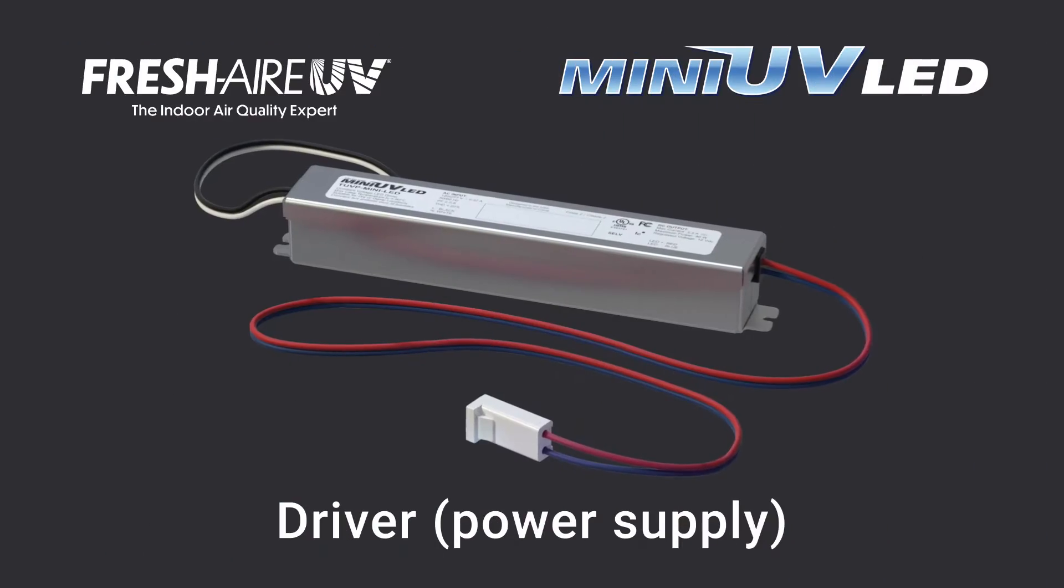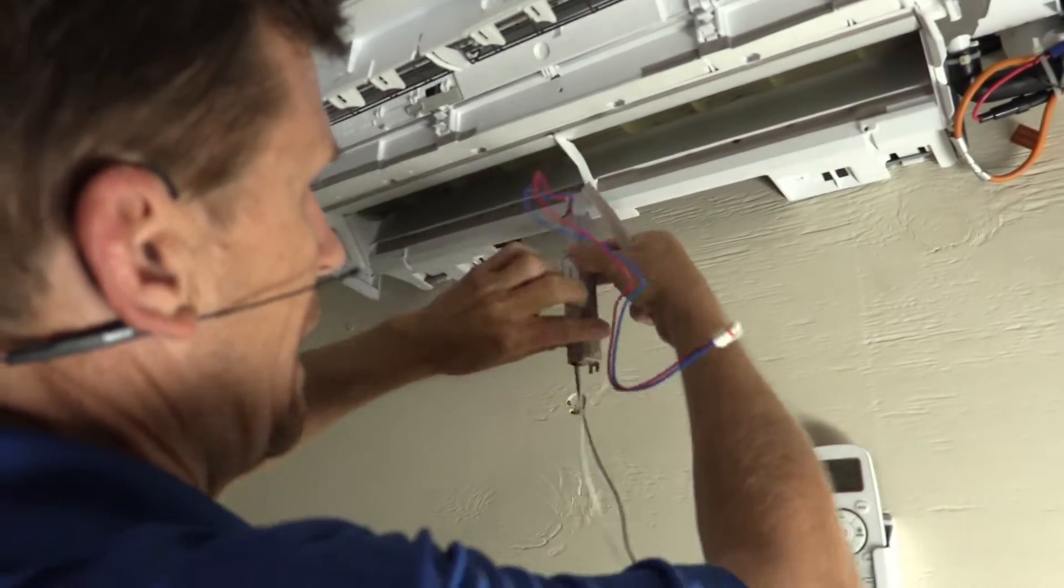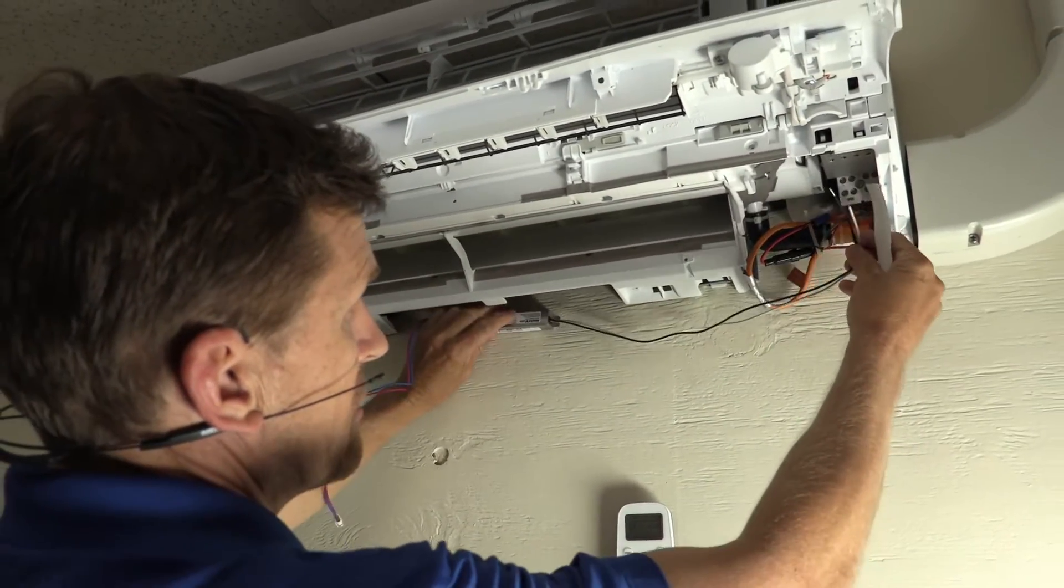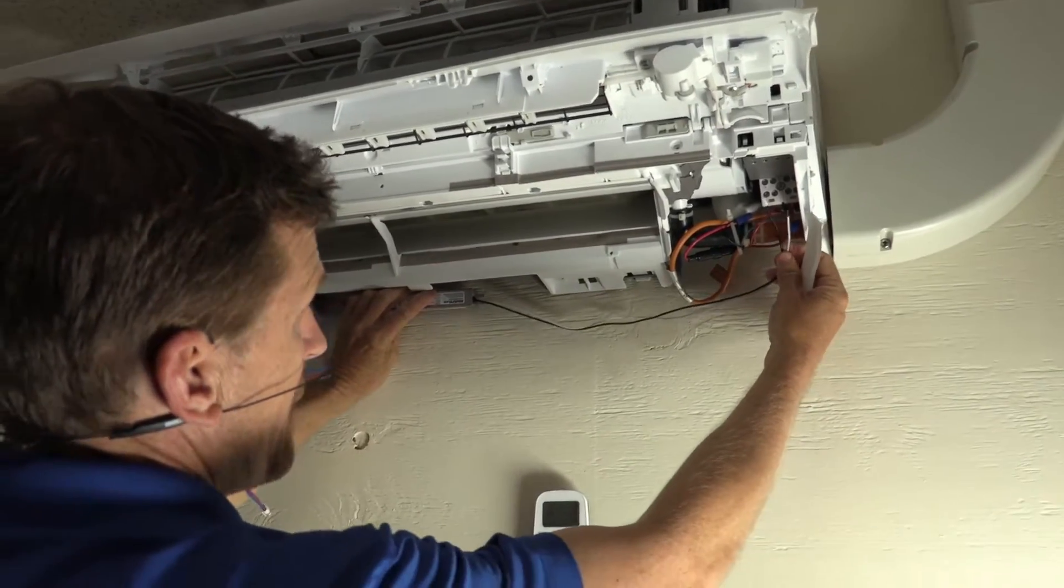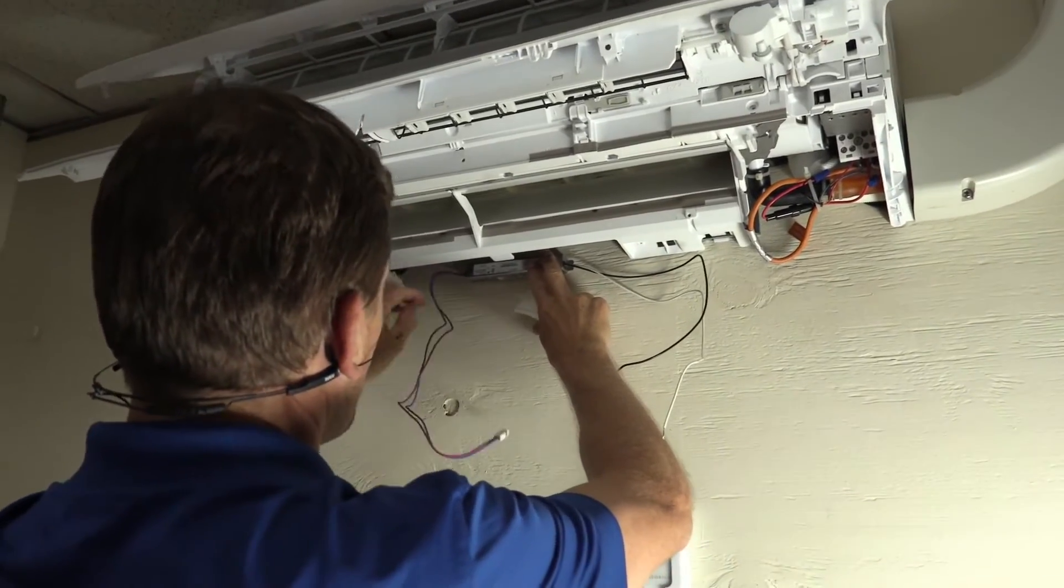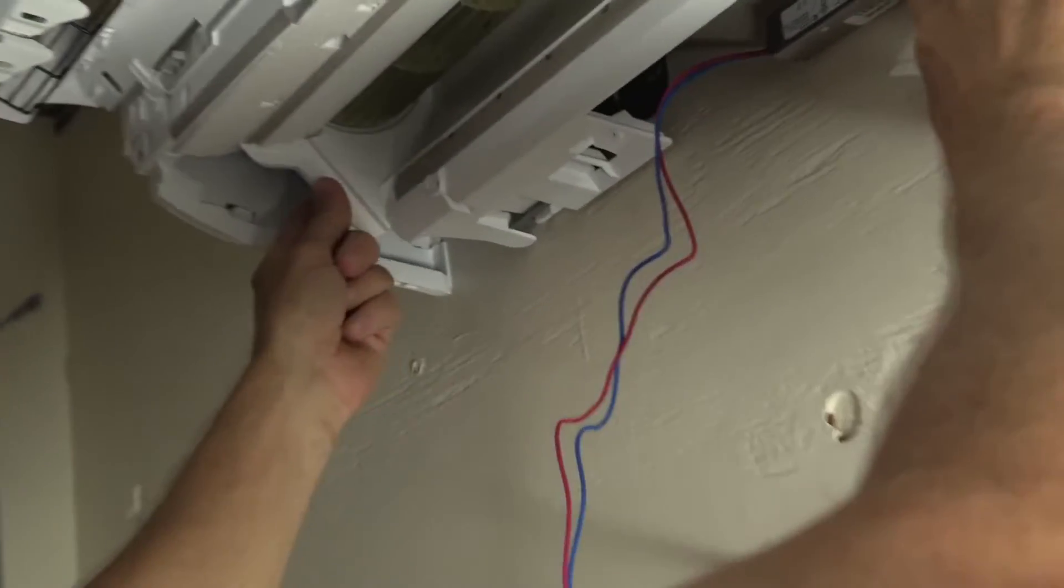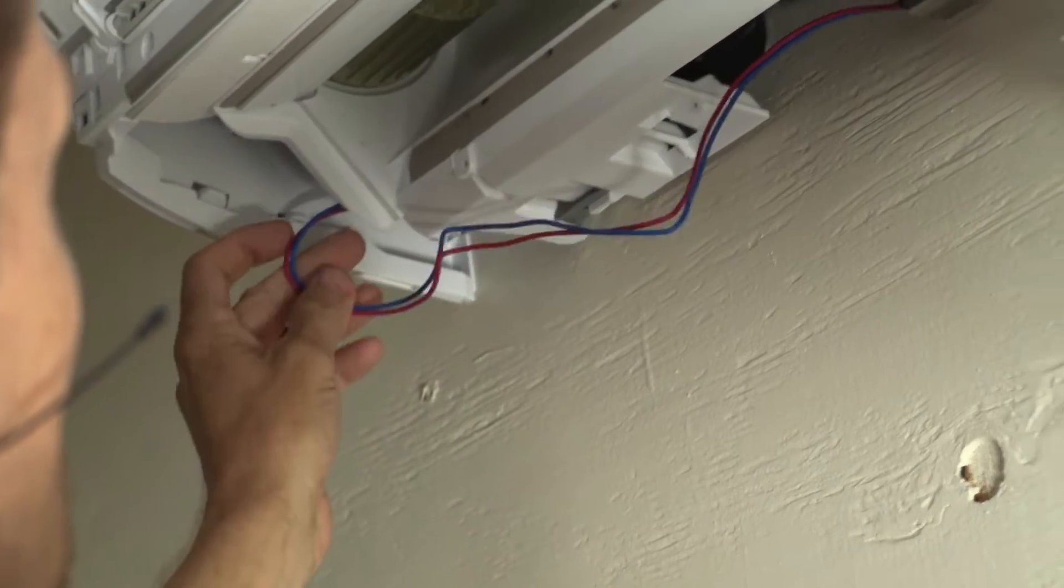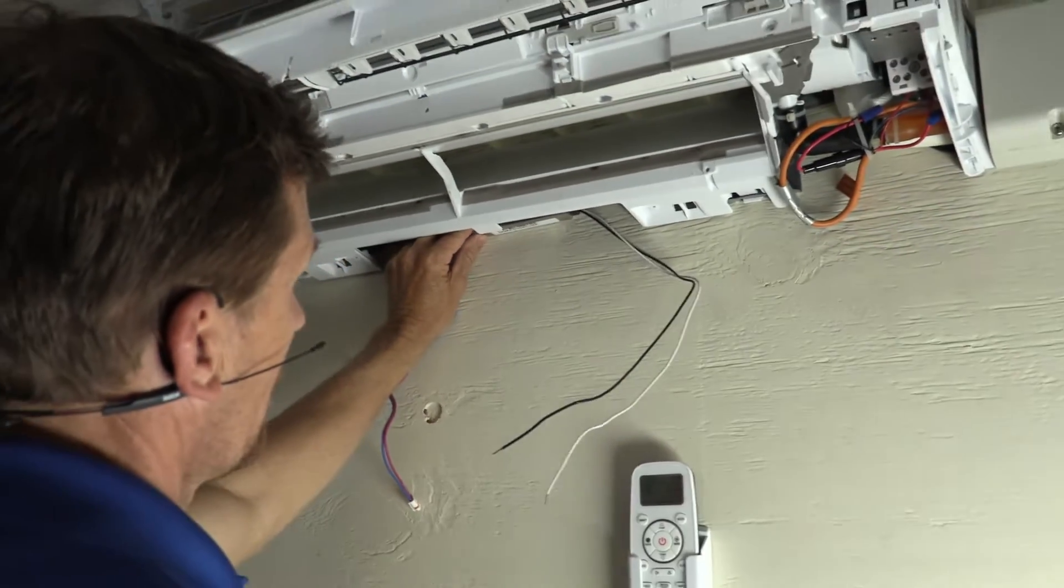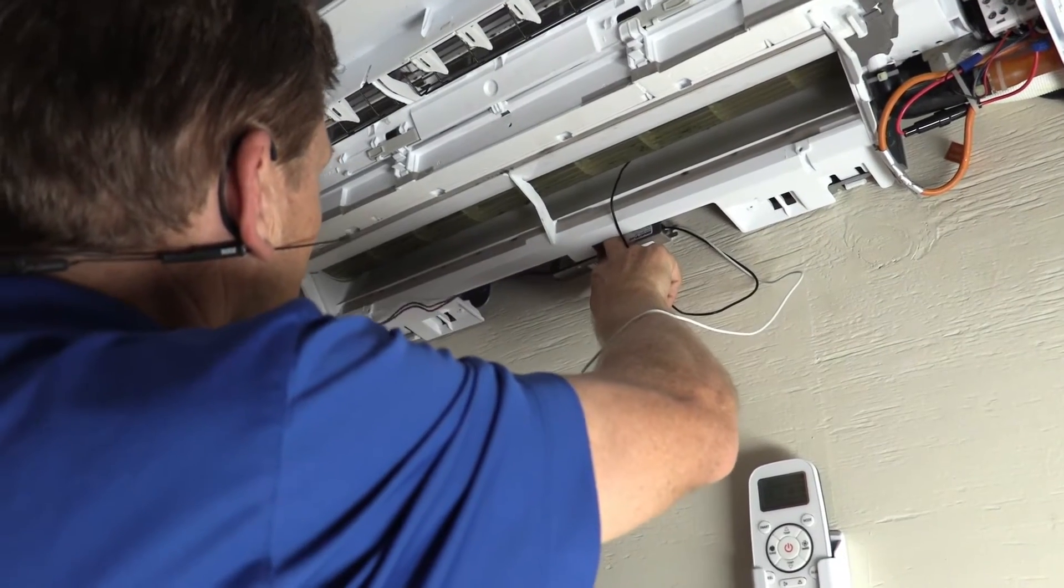When you're installing the driver, you want to first find the best location for it. In this particular model, you want to make sure that your leads are going directly to your control board, that you actually have enough wire to go directly to where you're going to be making your connection, and also that you're going to have enough wire to connect to the strip. In this case, we're actually going to make a hole penetration here on the left-hand side, just a small enough hole using a unibit to be able to feed this connector through so we can make the connection to the strip. And we're going to mount the driver dead center so we have enough wire on this side and we have enough wire to the lamp strip.